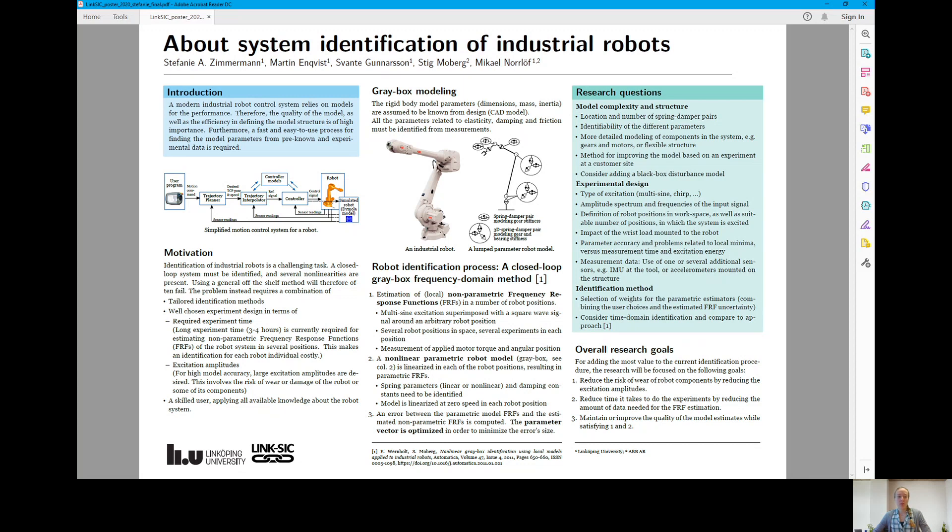One approach for identifying a robot model was developed by Erik Wernholt and Stig Moberg some years ago. It is a grey box frequency domain method which first estimates non-parametric frequency response functions in a number of different robot positions and then fits a parametric robot model to the measurements by minimizing the error between the FRFs.